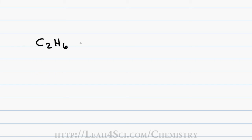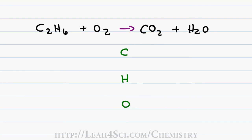Let's try one more combustion reaction: the burning of ethane, C2H6, plus O2. Recognize that a molecule with carbon and hydrogen reacting with oxygen is a combustion reaction, yielding CO2 plus H2O. Write your atoms in a column: 2 carbons on the left, 1 on the right; 6 hydrogens on the left, 2 on the right; 2 oxygens on the left, 3 on the right — don't forget oxygen in both CO2 and water. Carbon is not balanced, so I place a 2 in front of CO2, giving 2 carbons on the right but also updating oxygen to 4 from CO2 plus 1 from water, for a total of 5.